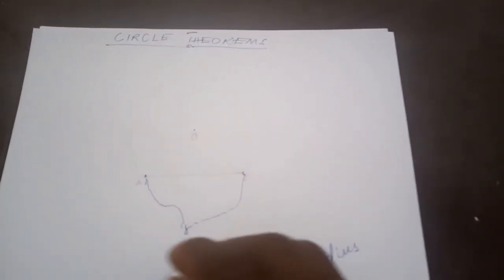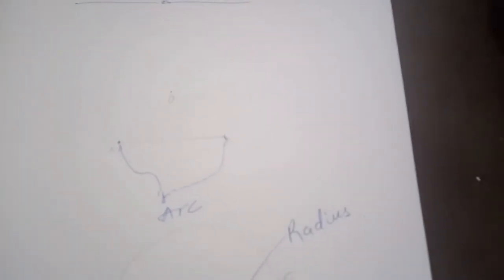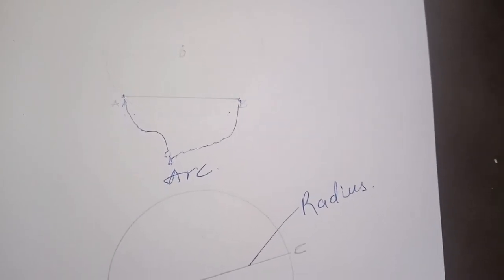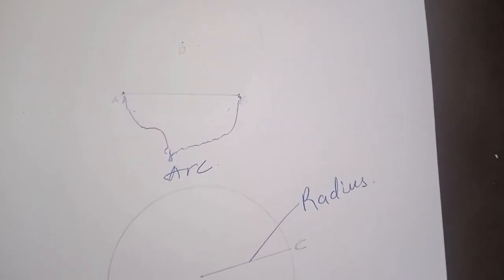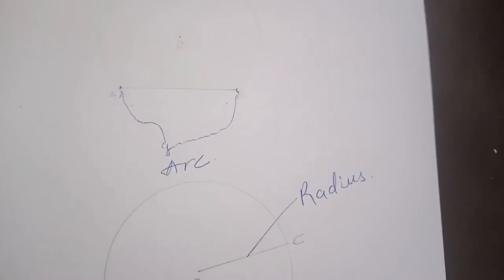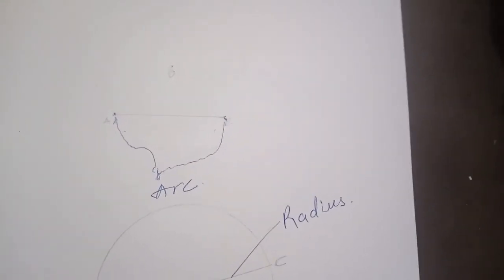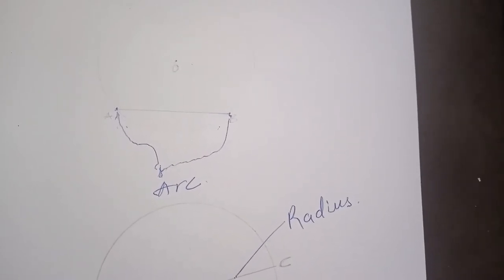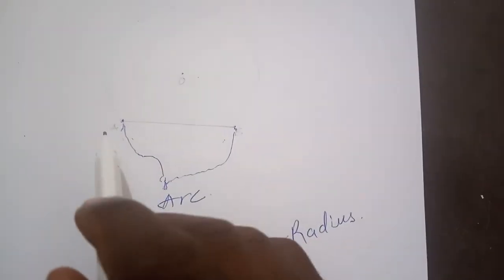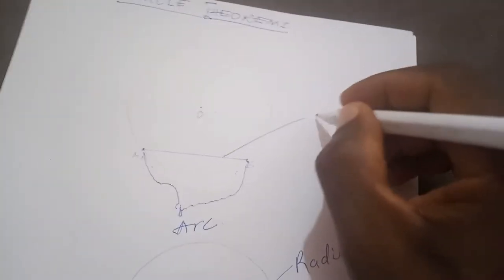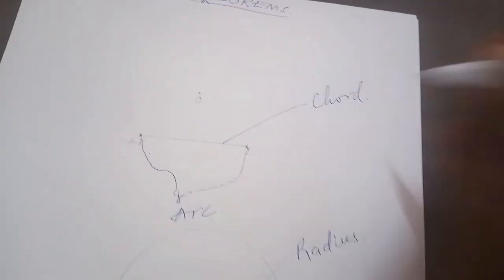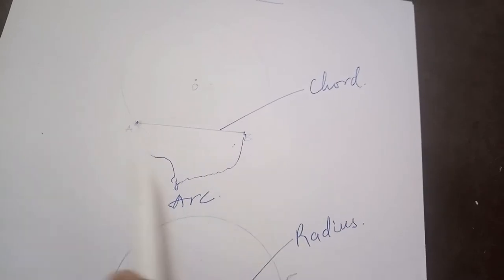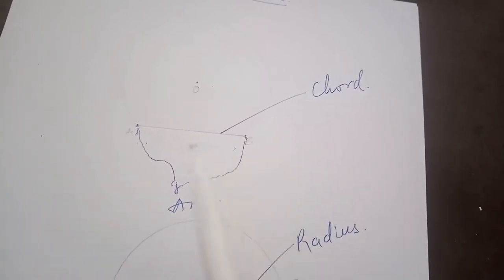An arc is any part of the circumference of a circle. We can also talk about a chord. A chord is any line drawn to touch any two points of the circumference of a circle. So clearly this line AB is a chord because it touches two parts of the circumference of the circle.